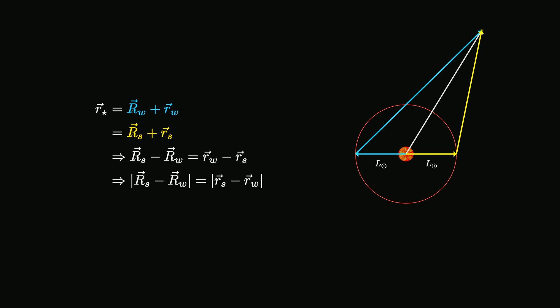So, the magnitude of the displacement of the star in the Earth frame is also 2L_Sun.